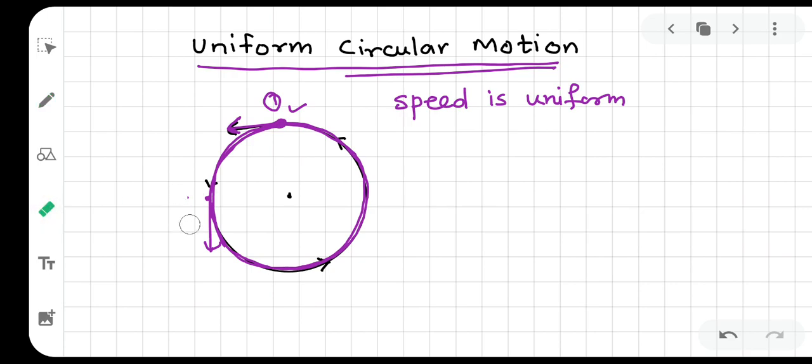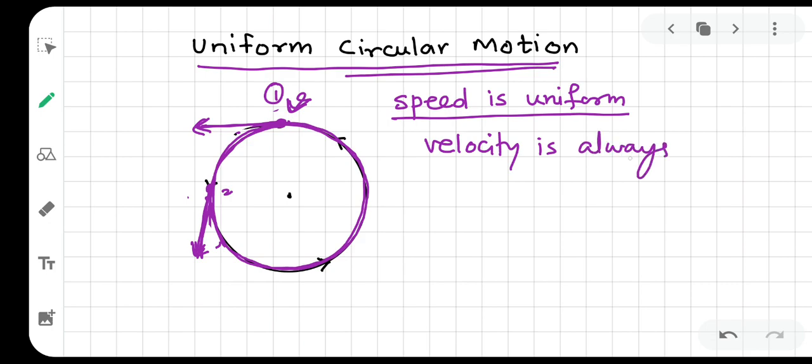One important thing you can observe here - if any place you can take a particle, it will be a velocity direction. Like at this point 1, the direction of the velocity will be tangential. If you take a point, there will be a tangential. Velocity is always tangential.